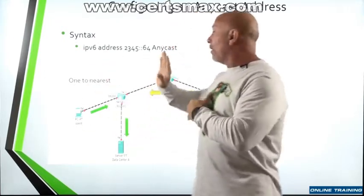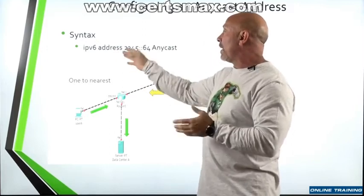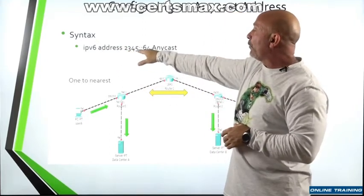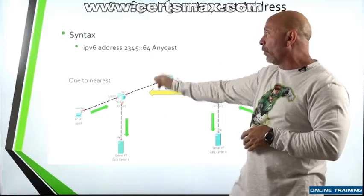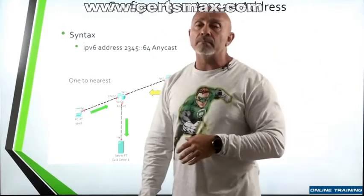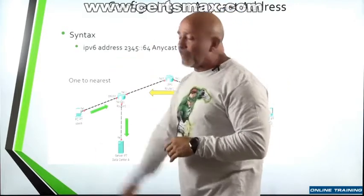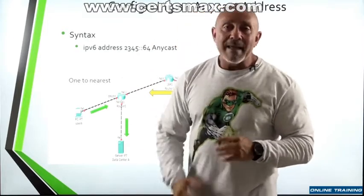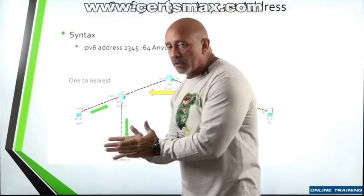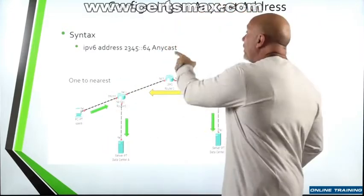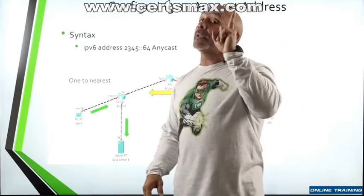Here's an example IPv6 anycast address: 2345::/64 — that's the prefix we're using. This address is part of the unicast range, so you need to make sure you append 'anycast' behind it if your feature set supports it.